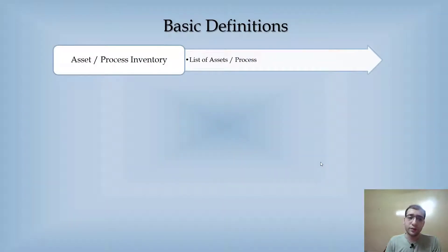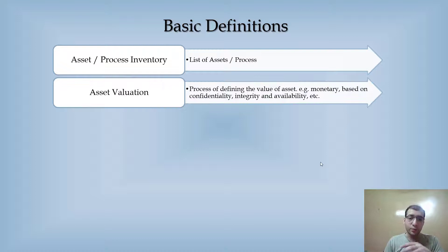First of all, what is an asset or process inventory? Whenever you perform a risk assessment, you need the asset or process over which you'll be performing your risk assessment. This means you need an inventory, a list where all the IT assets or processes are listed down. Second is asset valuation.